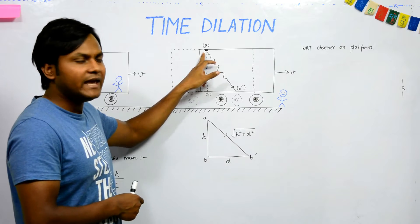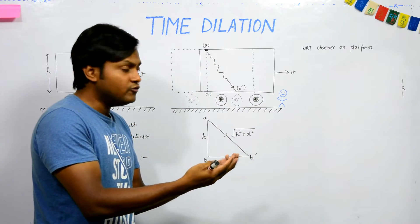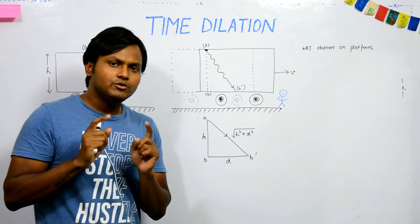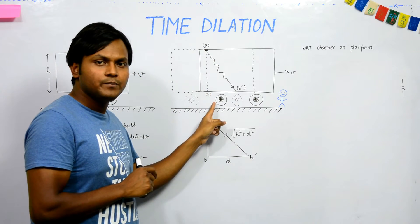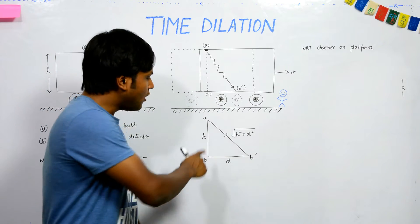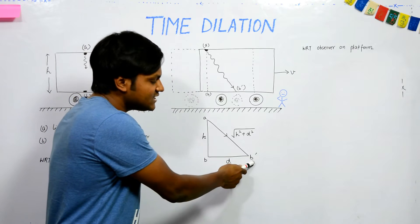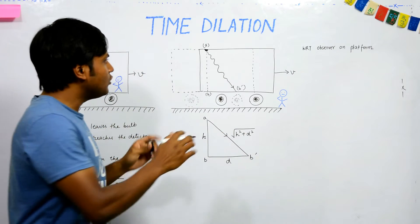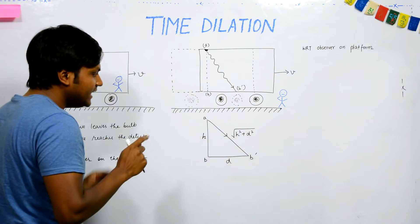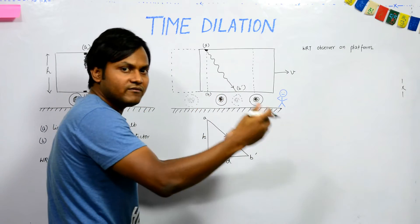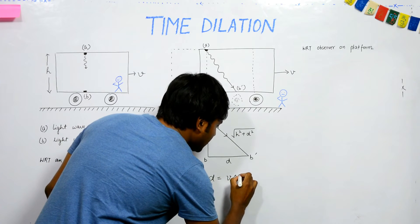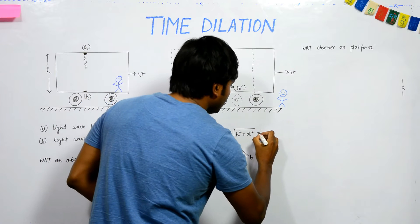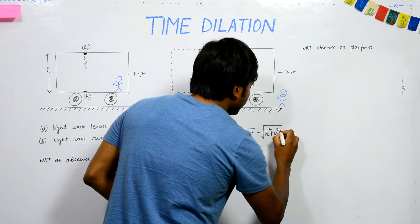When light is emitted by the bulb at point A, the train is at a particular location. But because the train is moving, by the time the light ray reaches the detector, the train will have travelled a certain distance forward. So the effective path of the light ray from the bulb to the floor is not vertically downward, but along the hypotenuse of a right-angle triangle — from point A to point B-dash, where B-dash is the detector's new position. If the time for light to travel is ΔT, the distance the train has moved is v·ΔT, giving a path length of √(H² + v²ΔT²).